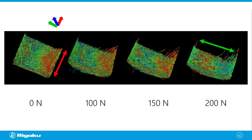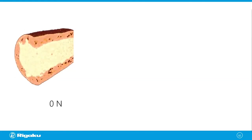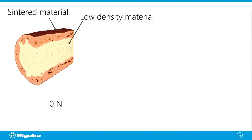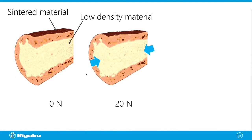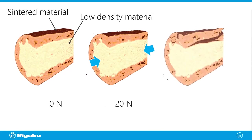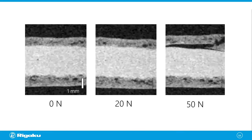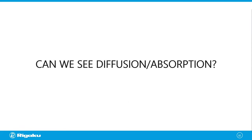Another stress measurement example: a cylinder of sintered material with very low density and a soft core. At 20 Newtons nothing changed, but at 50 Newtons the outer sintered material cracked. This type of experiment shows when and where the hard material cracks, and allows you to analyze crack width, length, where cracks initiate, and how they propagate. You can use stress-controlled CT for this type of material analysis.